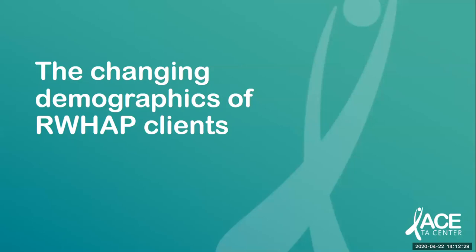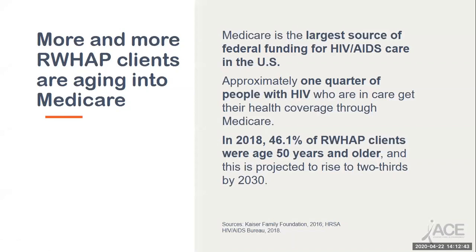Let's look at the changing demographics of Ryan White program clients. Historically, most Medicare beneficiaries living with HIV have been under the age of 65 and qualified for Medicare because of a disability. However, there are now more older adults living with HIV and served by the Ryan White program than ever before. Medicare is the largest source of federal funding for HIV/AIDS care in the U.S., and about one-quarter of people with HIV who are in care get their health coverage through Medicare. In 2018, 46% of Ryan White program clients were age 50 years and older, and this is projected to rise to two-thirds by 2030.